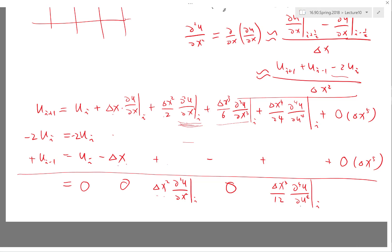The leading error being proportional to a high-order derivative of u is one of the primary reasons finite difference is not suitable for solutions that have sharp discontinuities, or even solutions that don't have sharp discontinuities but have non-smooth behavior. Finite difference can be pretty bad in those cases.